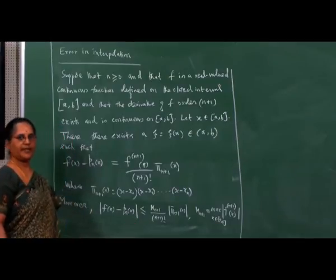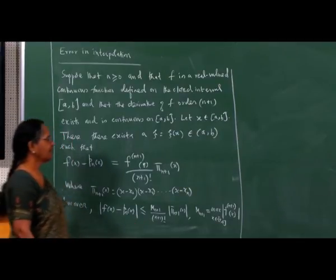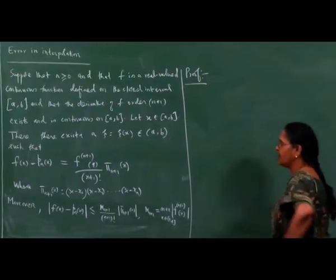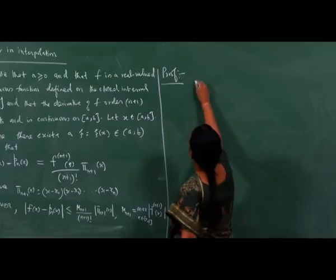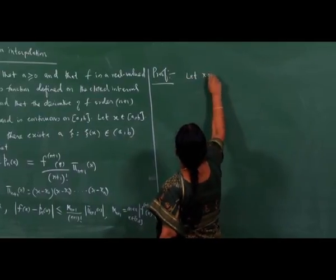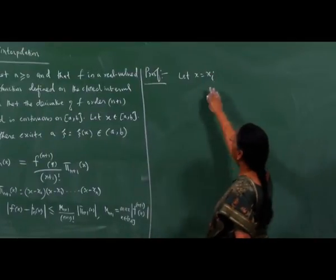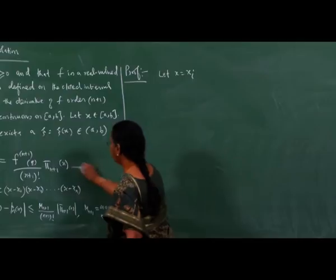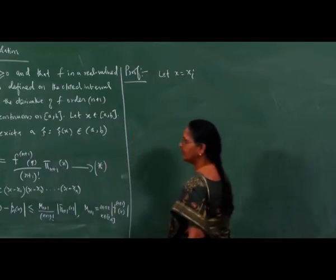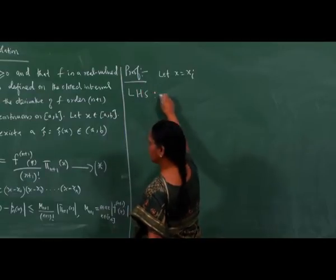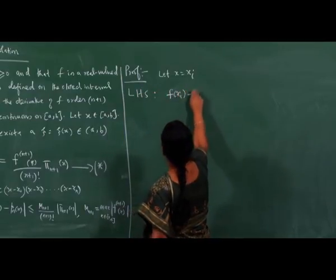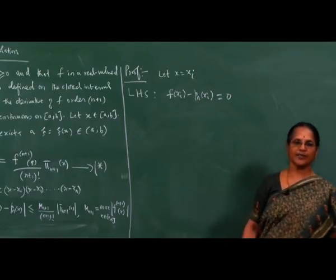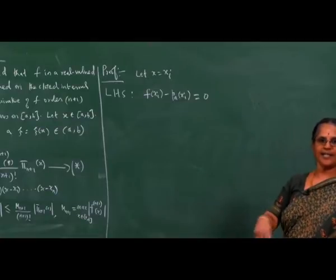This gives the error bound on the interpolation error. We shall now provide details of the proof of this theorem. Let us first take x to be ξ_i — the interpolation points. The left-hand side of (★) is f(ξ_i) - p_n(ξ_i), which is 0, because ξ_i are the interpolation points at which p_n(x) interpolates the function f.